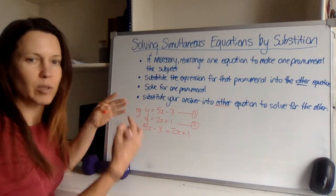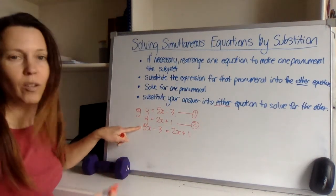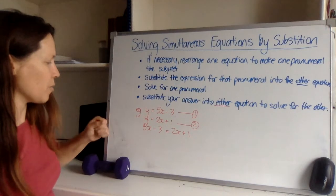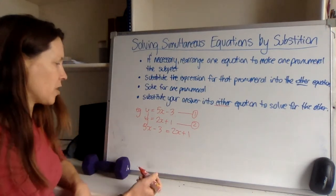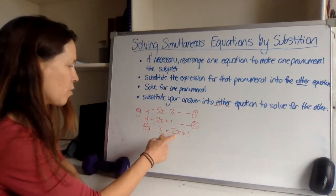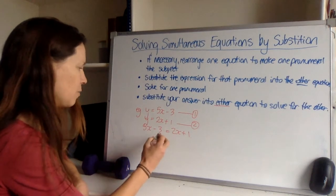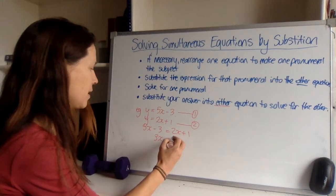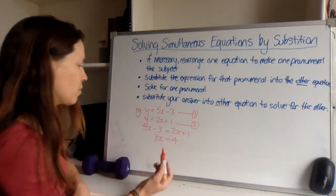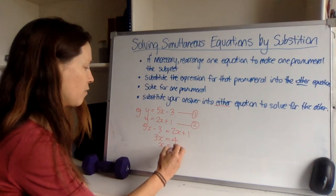Now once you've made that substitution, you've eliminated one of the pronumerals. There's no y's in this anymore, there's only x's. So now I can actually solve it for x. Let's subtract 2x from both sides and add 3 to both sides and I can see that 3x is equal to 4, so x must be 4 thirds.